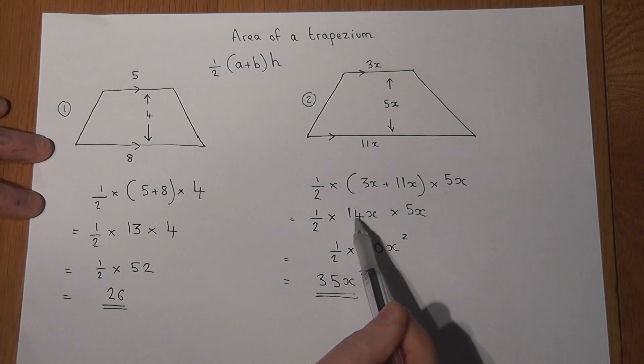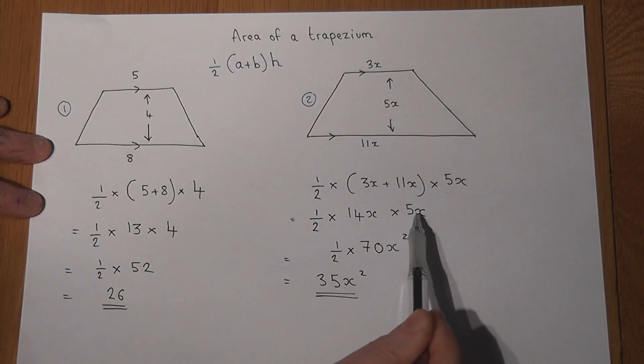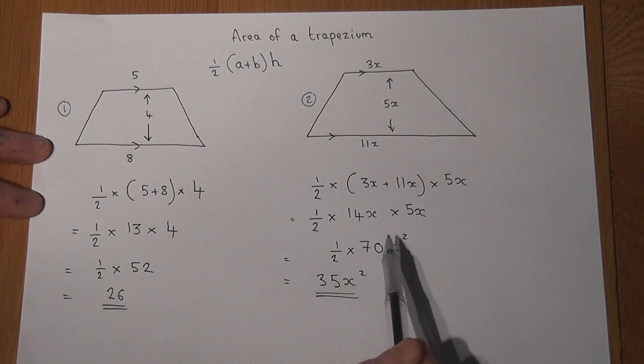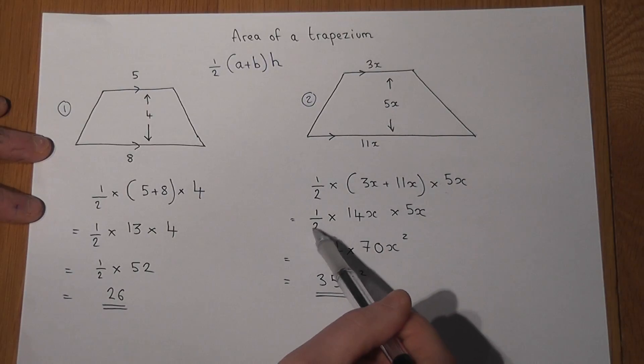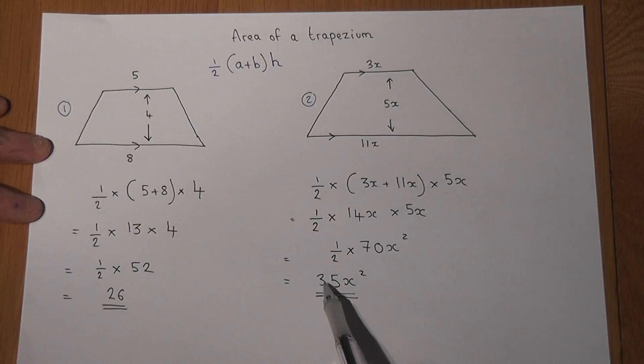Remember, x times x is x squared. But if you think about it, a half of 14 is 7, and 7 times 5 is 35, so whichever order you do, you'll get down to the same answer in the end.